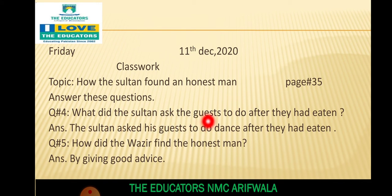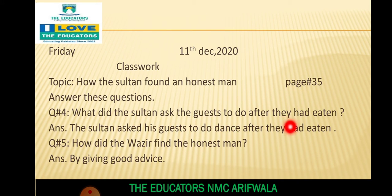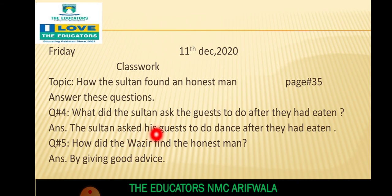Question 4: What did the sultan ask the guests to do after they had eaten? جب کھانا کھا لیا تو sultan نے اپنے guests سے کیا کرنے کے لیے کہا؟ The sultan asked his guests to dance after they had eaten. Question 5: How did the وزیر find the honest man? وزیر نے ایماندار شخص کو کیسے ڈھونڈا؟ By giving good advice - اس نے ایک اچھی نصیحت دی۔